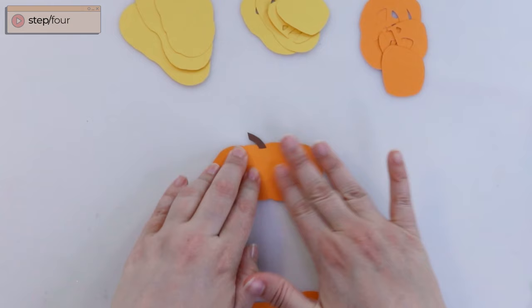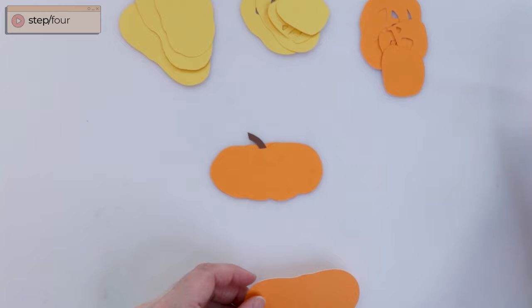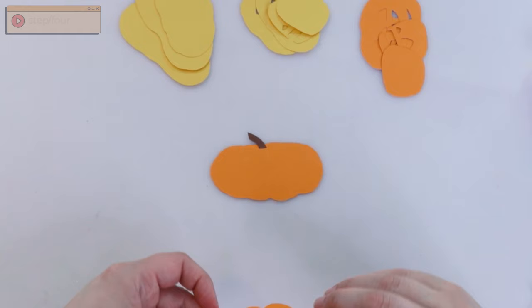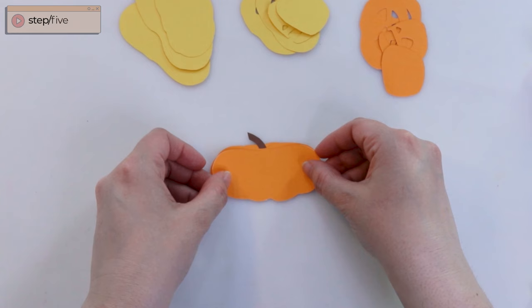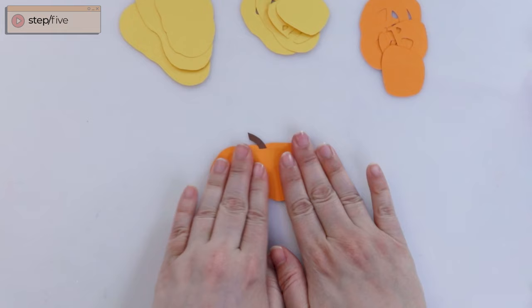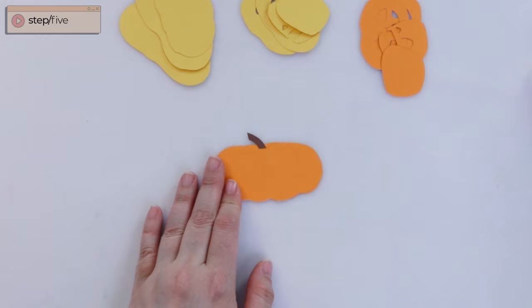Now you're going to notice all of these pumpkins kind of have a little butt to them. Anytime you are placing these shapes on top of one another, make sure that you're lining that little butt at the bottom; that's going to help you keep these shapes lined up correctly. So once you have those two shapes glued together, go ahead and take your last large orange piece and glue that right on top with your tape runner. And as you can see, the pumpkin is already starting to take on a 3D effect.